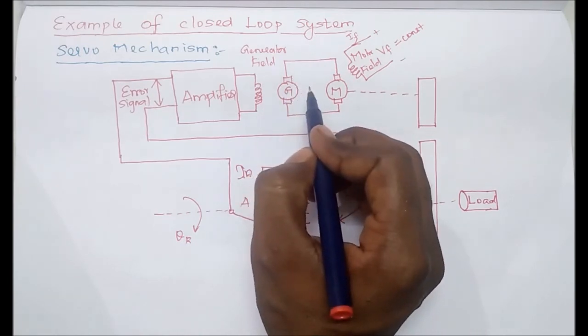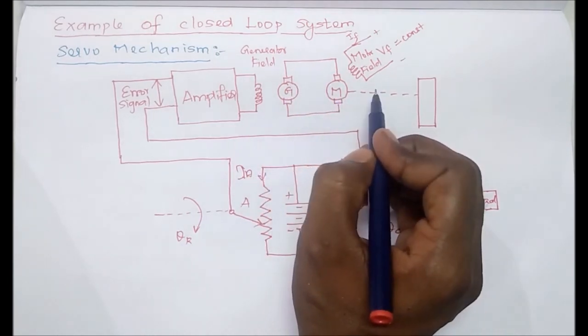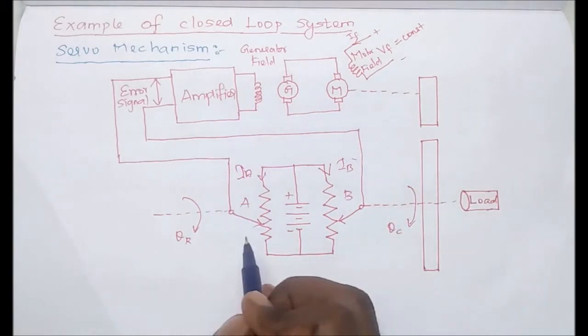The motor will stop running. This is an example of a closed-loop system.